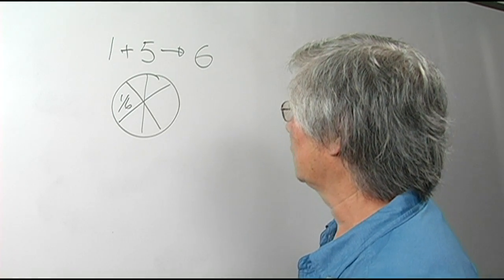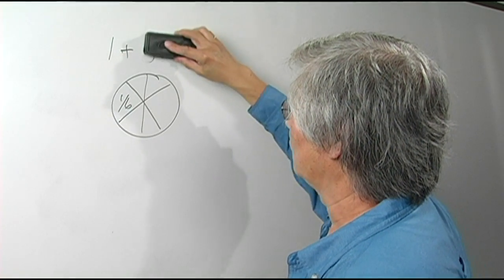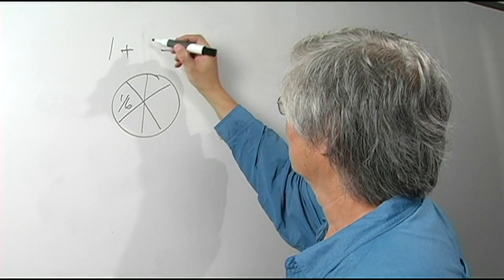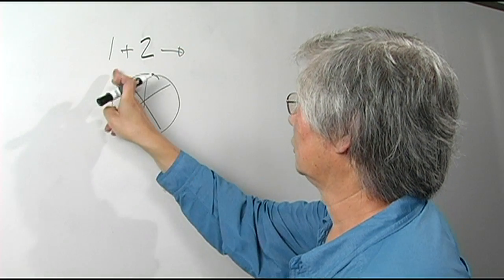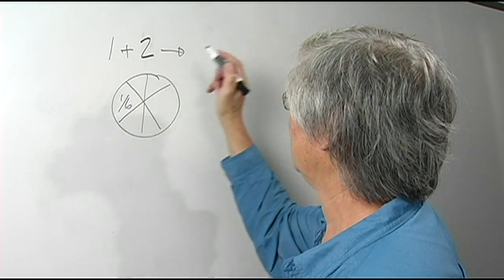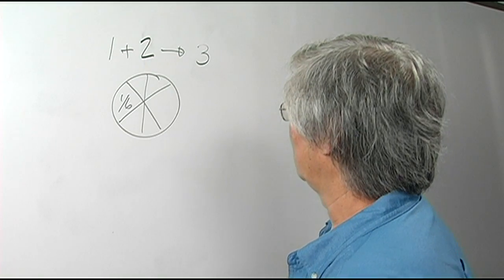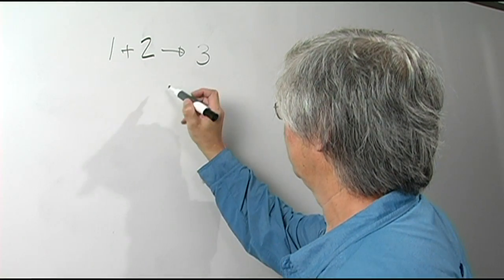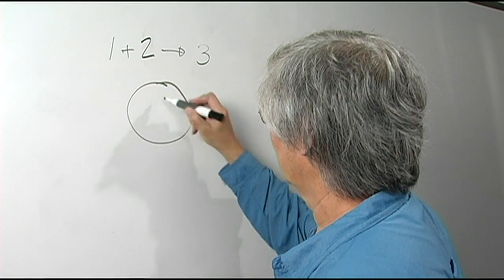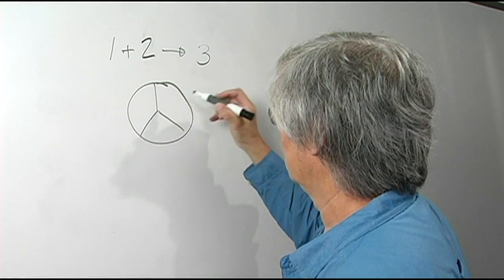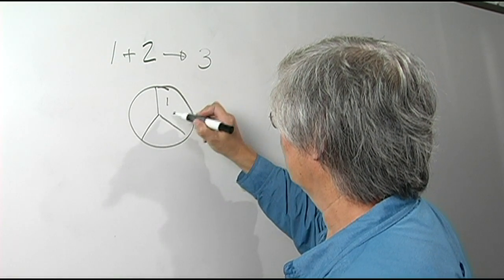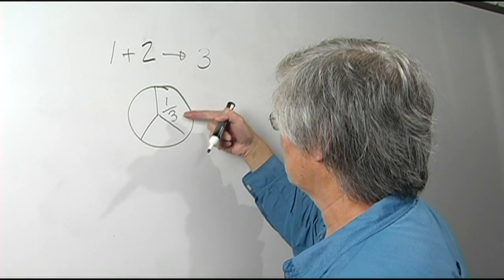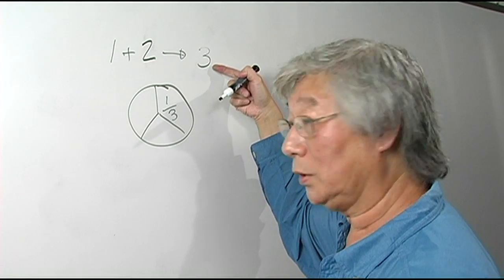Now let's take another example. Suppose I'm sharing the pizza with two people. So the total number of people sharing the pizza would be three, and my pizza will be cut this way. Each one of these pieces will be one third — again, the reciprocal of the number of people sharing the pizza.